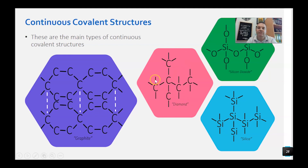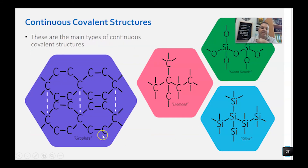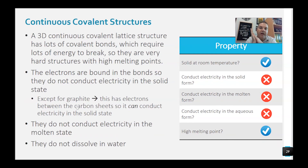Diamond has a tetrahedral arrangement around each carbon atom with no free electrons, so it doesn't conduct electricity. Silicon dioxide and pure silica also have tetrahedral arrangements. Because they're three-dimensional lattices, covalent lattice substances have very high melting points and are solid, but with the exception of graphite they don't conduct electricity in the solid, molten, or aqueous state. The reason graphite does conduct is the delocalized electrons between its sheets — similar to what we'll find in metallic bonding later.